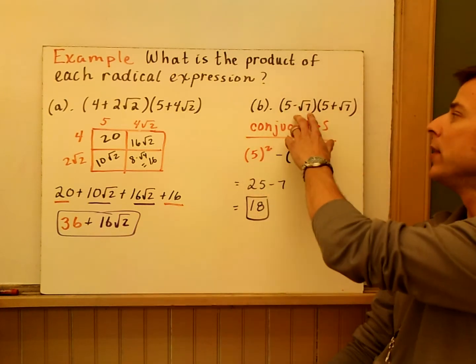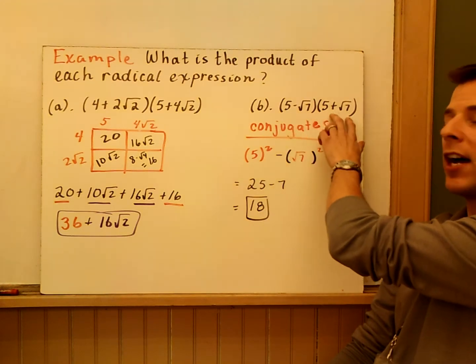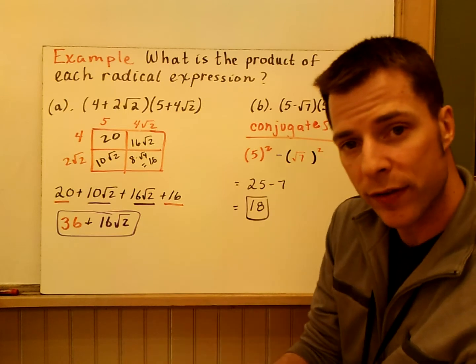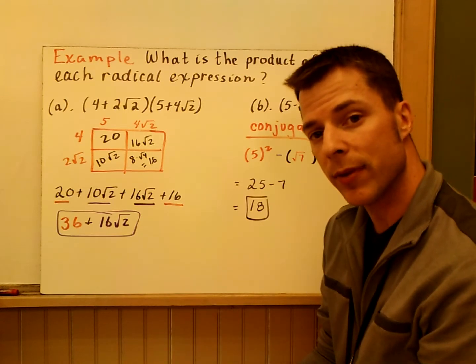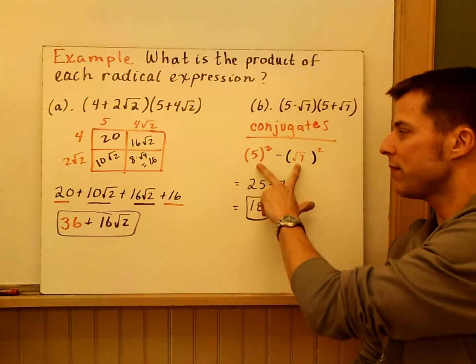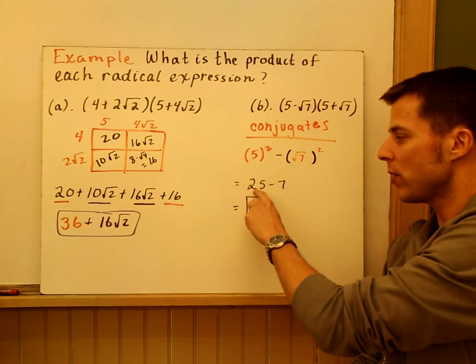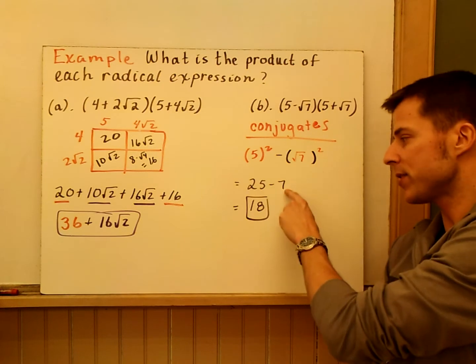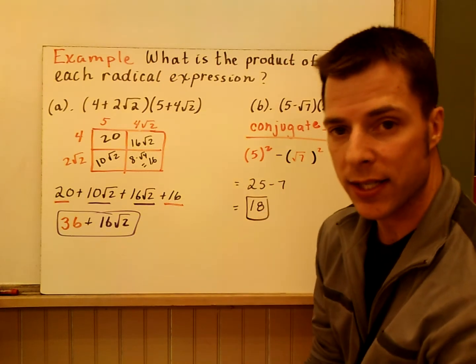In the second example, 5 minus root 7, that quantity times 5 plus root 7. These are conjugates. So just square the first term and the last term and make sure there's subtraction. So that's what I've done here. 5 squared is 25. Square root of 7 squared. That undoes the square of the radical. So it just becomes 7. So the total is 18.